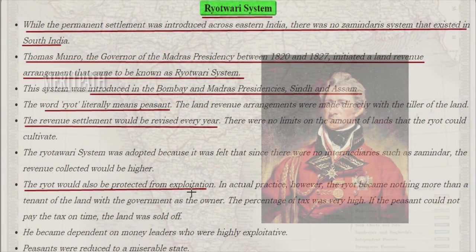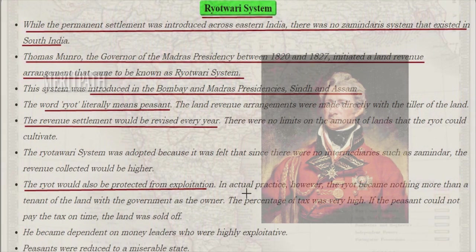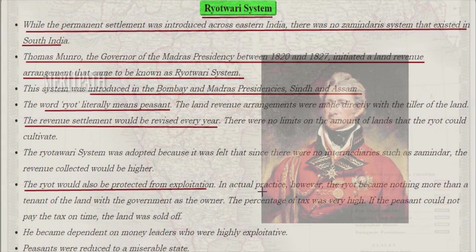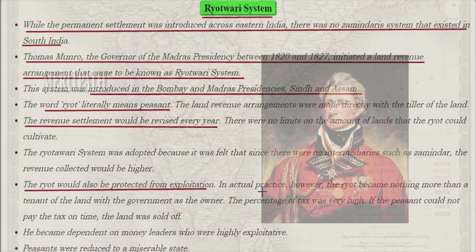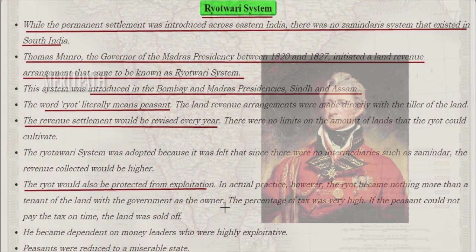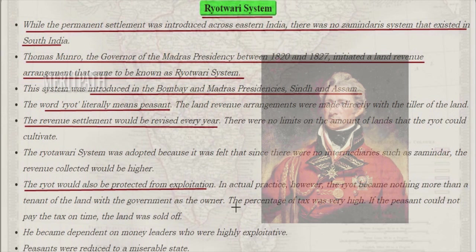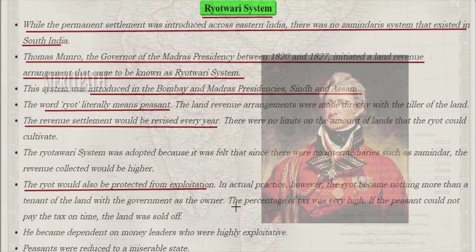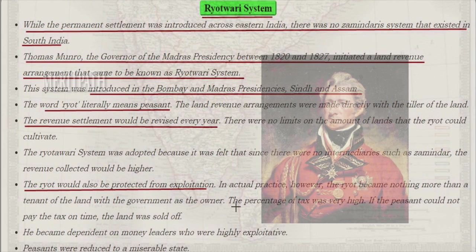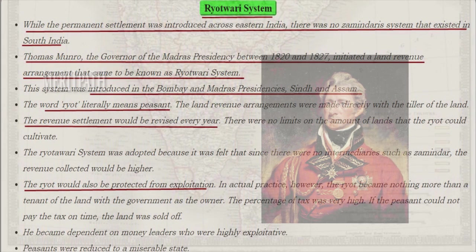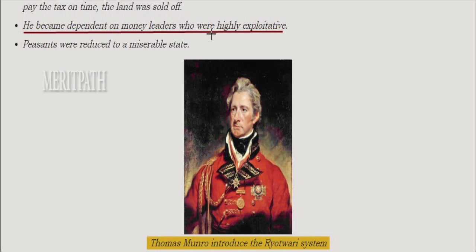It was also believed the Ryotwari would be protected from exploitation. In actual practice, however, the Ryot became nothing more than a tenant of the land, with the government as the owner. The percentage of tax was very high. If the peasant could not pay the tax on time, the land was sold off, making him dependent on money lenders who were highly exploitative. Peasants were reduced to a miserable state.